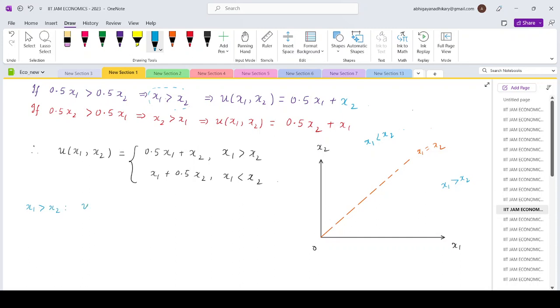In that case my utility function looks like 0.5x₁ plus x₂. So differentiate it throughout, that is 0.5 dx₁ plus dx₂.